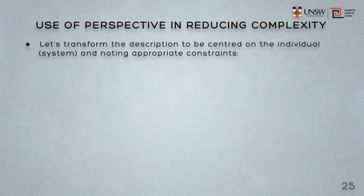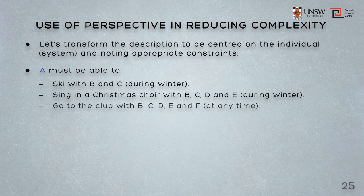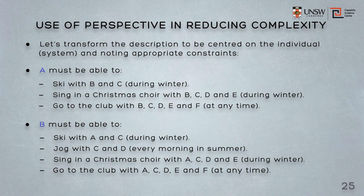So, for example, if we look at Al, we say that Al must be able to ski with Bob and Chris, but only during winter; must be able to sing in a Christmas choir with Bob, Chris, Dave and Ed, but only during winter; must be able to go to the club, but at any time. Bob must be able to ski with Al and Chris, etc. And so the system of systems perspective is important in that the top-down view is necessary for any design.